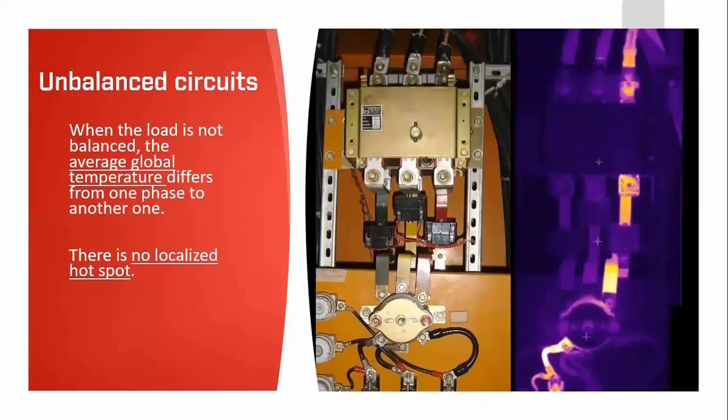When the load is not balanced, the average global temperature differs from one phase to the other. Looking at this thermal picture, we can clearly see that the right-hand phase is warmer compared to the others, and there's no real localized hot spot — it's a general phase temperature difference.